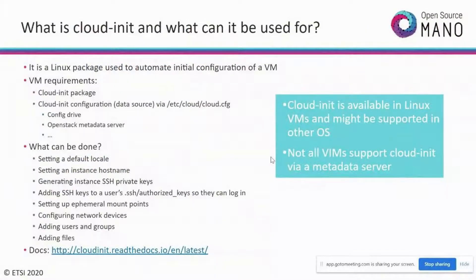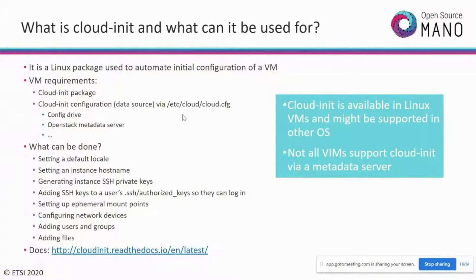For the SRS-LTE cloud-init, under the run commands section, there's a set of routes needed for SRS to send traffic. These routes are specific to our lab network and may change if you provision it in your own network. This covers the SRS-LTE cloud config. Now we can start onboarding the packages to OSM using the Magma directory that was cloned.